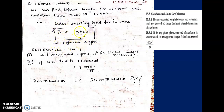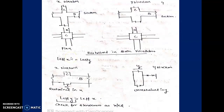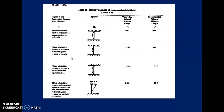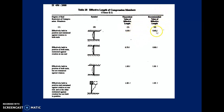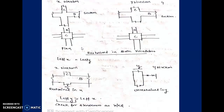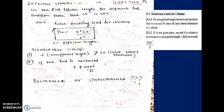How do we find the effective length Le? From IS 456 Table 12, depending on end conditions, both theoretical and recommended values are given. We will always go for the recommended value — for example 0.65L — depending on the end conditions given in the question.